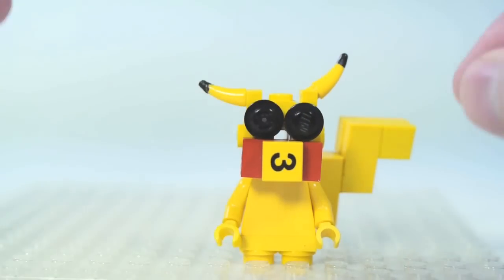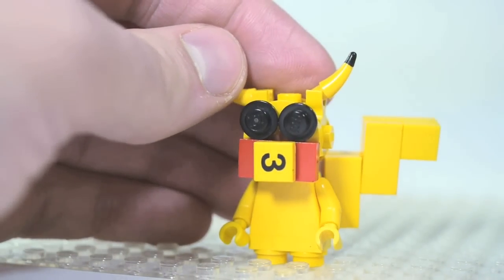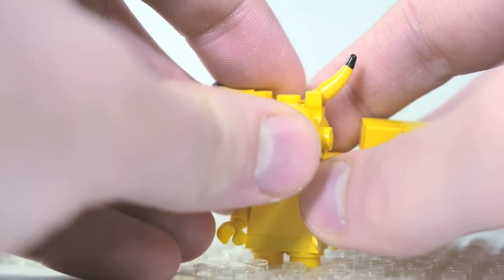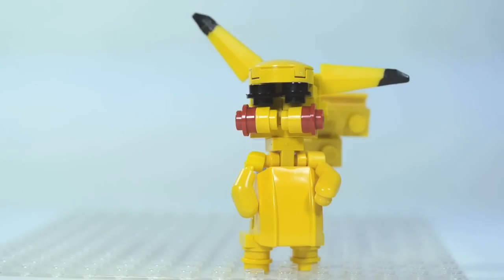Now we stick the head onto the body. And of course, if you don't want to make that brick-built face, you've also got the painted face as an option for Pikachu here. Now let's move on to the double fig scale Pikachu.